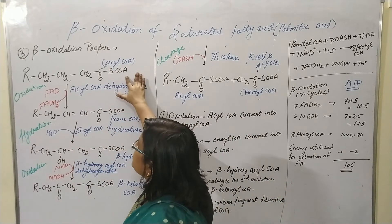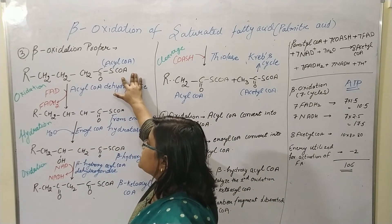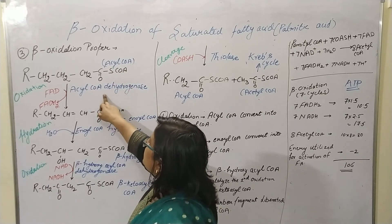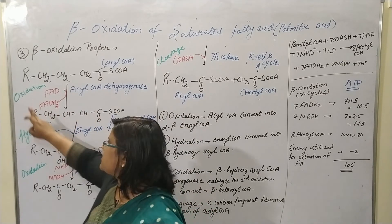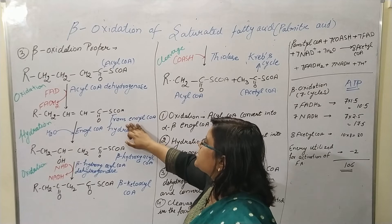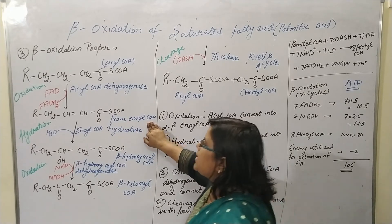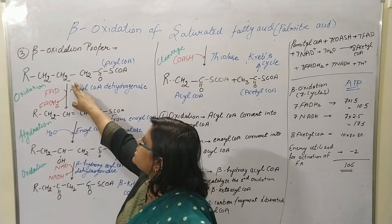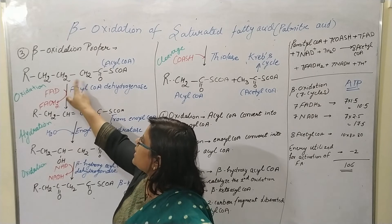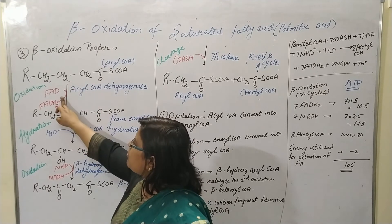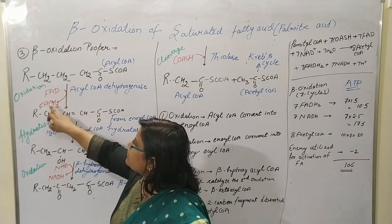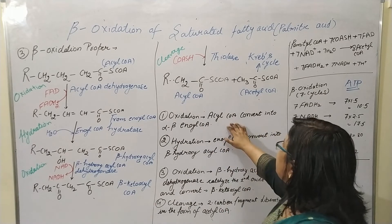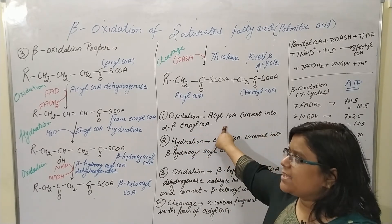Once acyl coenzyme A reaches the mitochondrial matrix, oxidation begins. In the presence of acyl coenzyme A dehydrogenase, an oxidation reaction takes place. One hydrogen from the alpha carbon and one from the beta carbon are released as H2, which combines with FAD to form FADH2. The acyl coenzyme A is converted into trans-enoyl coenzyme A. This reaction is the first oxidation.